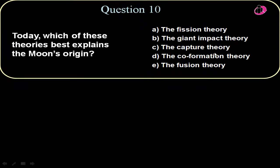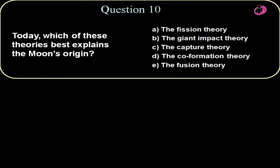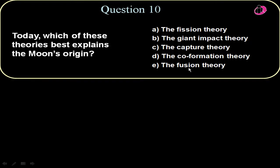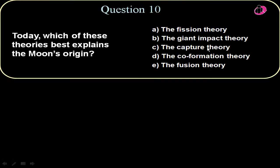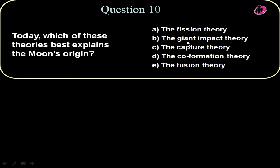The capture theory, the Earth doesn't have enough gravity to really capture something as big as the moon. The co-formation theory would suggest that the material of the moon would be around the Earth's equator, and it's not. It's near the ecliptic plane. And the fusion theory, I don't know what that theory is. So the only theory, the best theory as of today, is the giant impact theory.